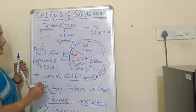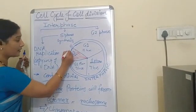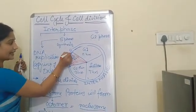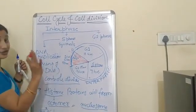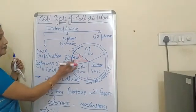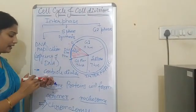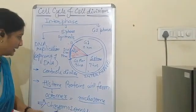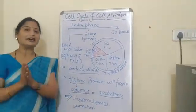The division phase consists of two parts: karyokinesis and cytokinesis. Karyokinesis consists of four sub-phases — prophase, metaphase, anaphase, telophase — and cytokinesis means division of the cell. So this is all about the cell cycle.